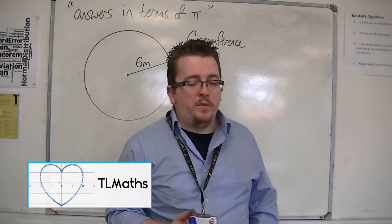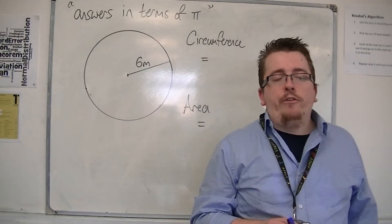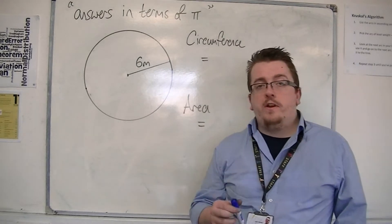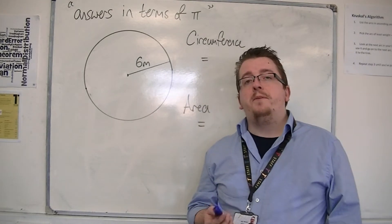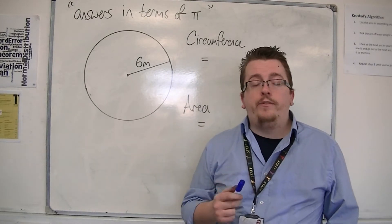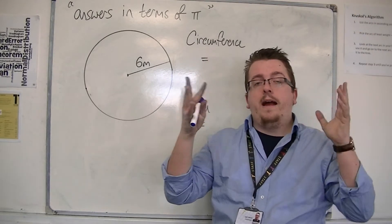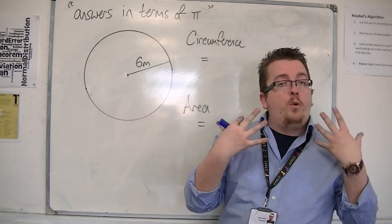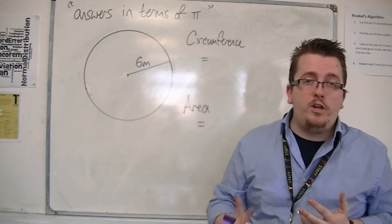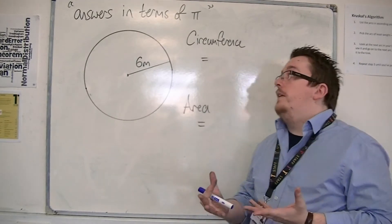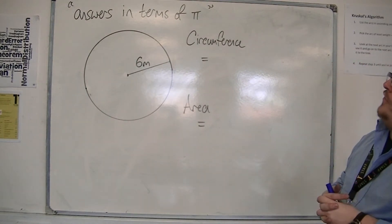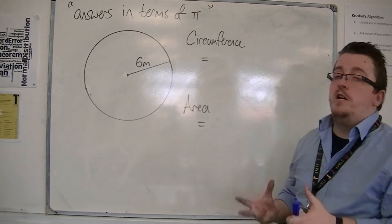It could be quite possible that an area and circumference question for a circle comes up on a non-calculator paper. In which case, you won't be required to remember pi as a great long list of digits. You'll have to use some form of approximation. The first type of these is when the question asks you to leave your answer in terms of pi.